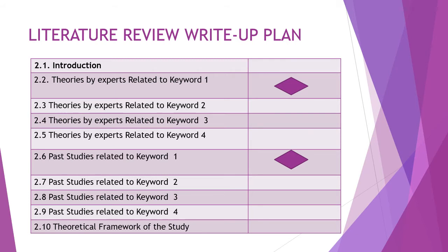For the literature review write-up plan: the introduction uses an inverted triangle from broad to general describing what the whole chapter contains. Then sections 2.2, 2.3, 2.4, 2.5, 2.6, and 2.7 each correspond to one diamond. When one diamond becomes too long, you can break it into multiple paragraphs. Finally you have the theoretical framework section.